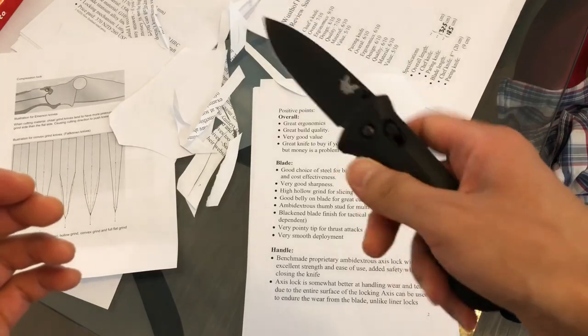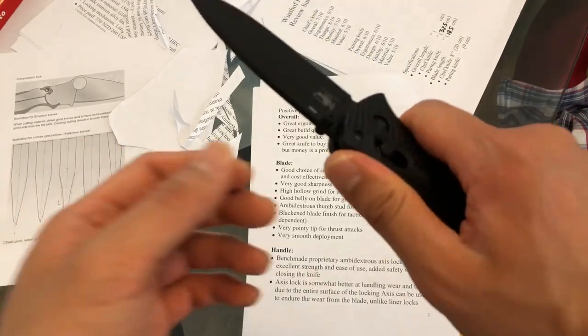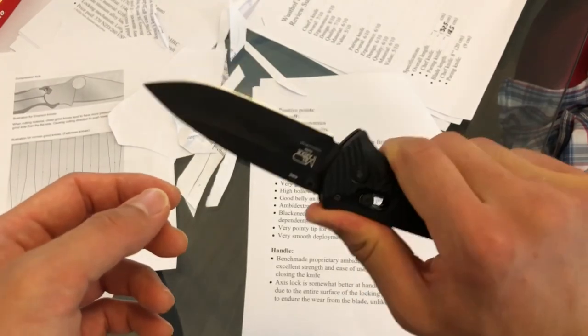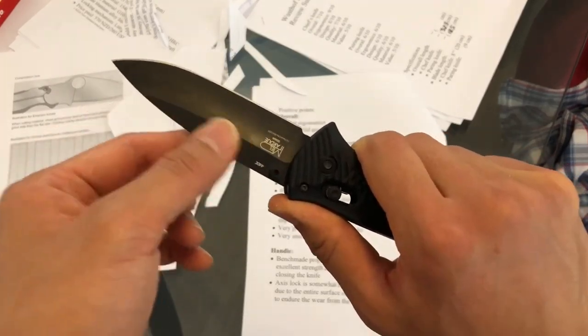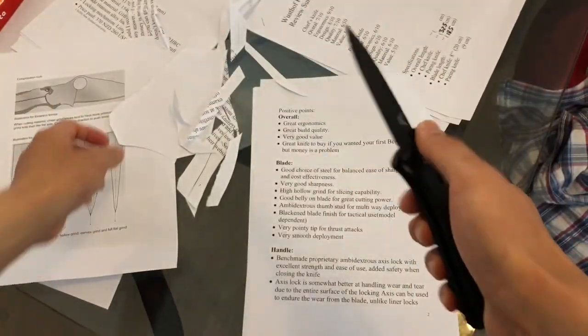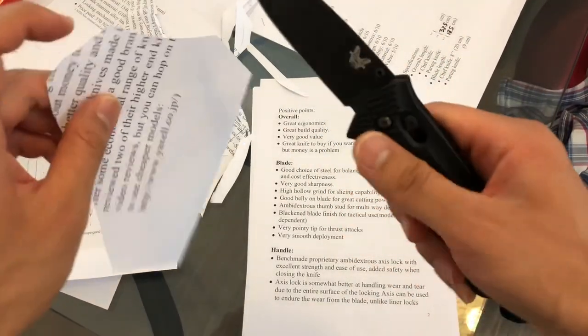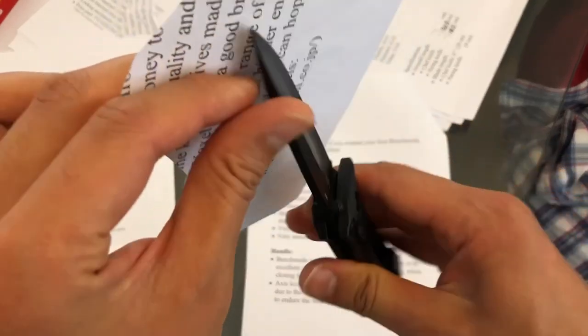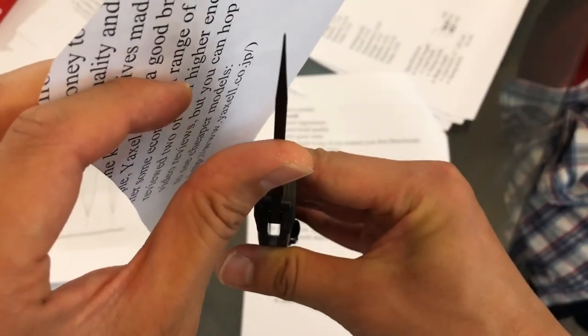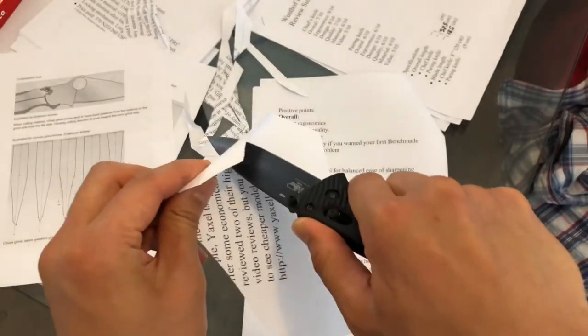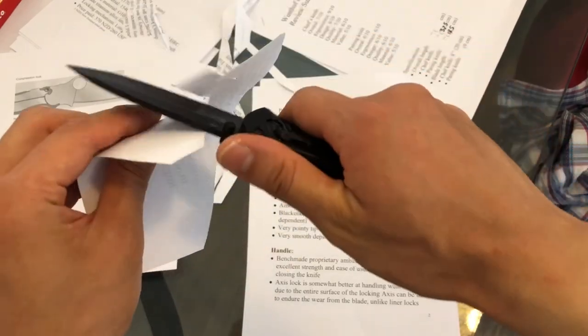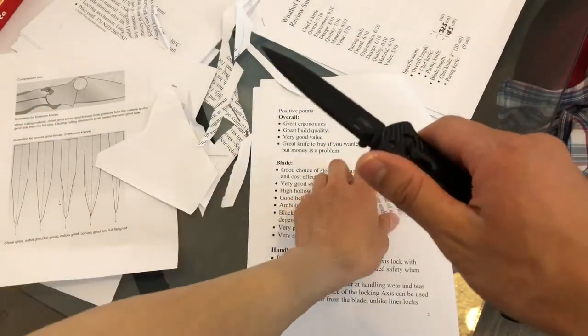Obviously the blackened blade gives you some degree of tacticality if you are, say, a military soldier or something and have to hide or conceal your position. And the tip here is very, very pointy for a drop-point knife, partially due to the fact it's a high hollow grind. As you can see here, it's very thin this way. And if I thrust into this paper, it's very, very easy as well. So that's very nice.